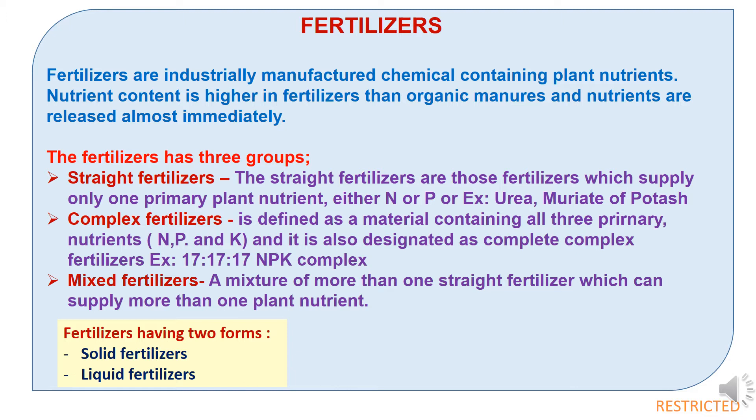The second type is complex fertilizers. A complex fertilizer is defined as a material containing all three primary nutrients — nitrogen, phosphorus, and potassium — and is also designated as a complete complex fertilizer. For example, 17-17-17 complex contains nitrogen, phosphorus, and potassium in the ratio of 17:17:17.